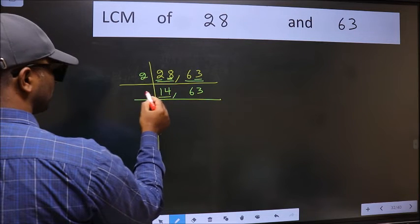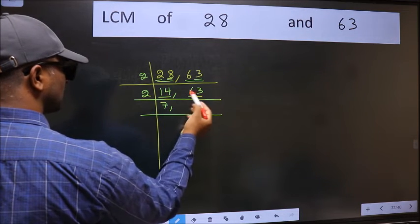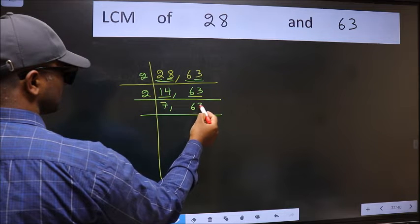Now here we have 14. 14 is 2 times 7 is 14. The other number 63, not divisible by 2. So you write it down as it is.